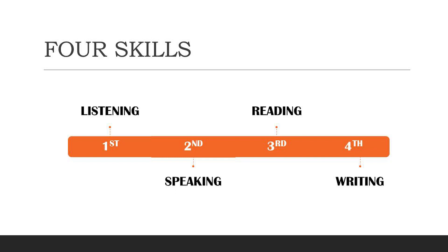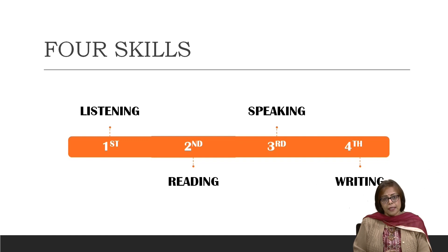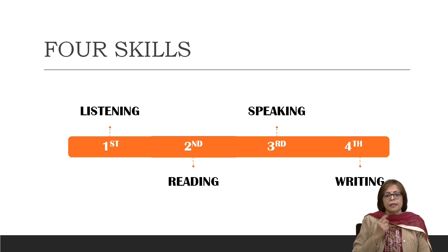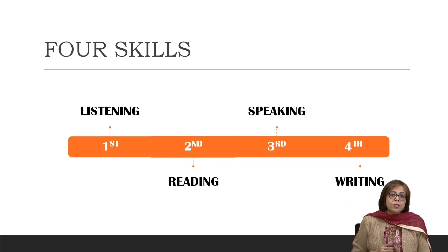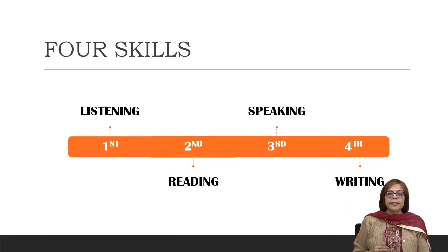So, if you look at the natural learning order of languages, the child first listens, then speaks, then reads, and then writes. Accordingly, we divide language into four basic skills. The first skill the child is acquainted with is the listening skill. The second skill is speaking — the child first learns to babble and utter certain sounds. Then comes reading, and then comes writing. On one hand, you have two associated skills: listening and speaking. On the other hand, you have reading and writing, which are also associated with each other.